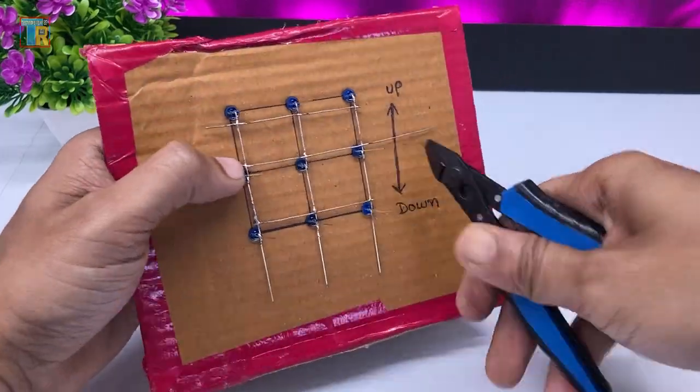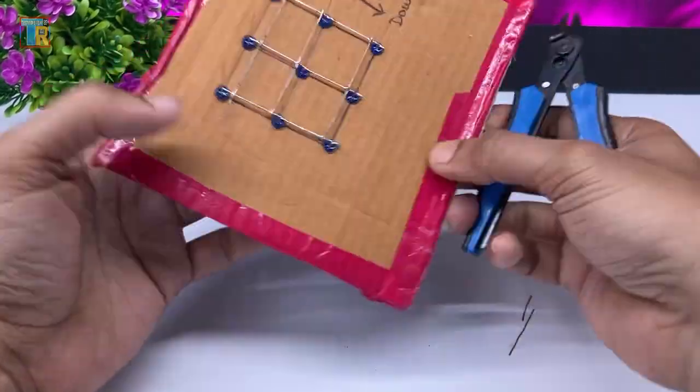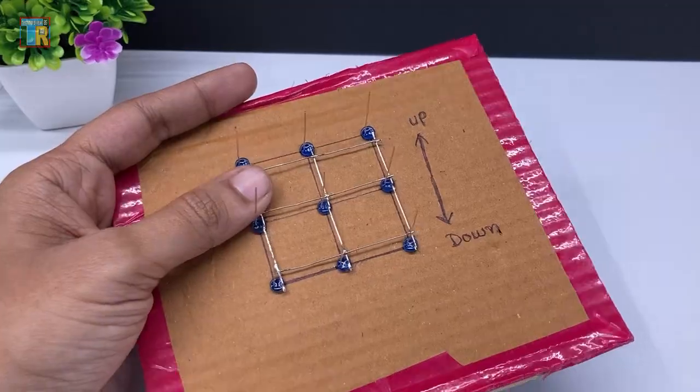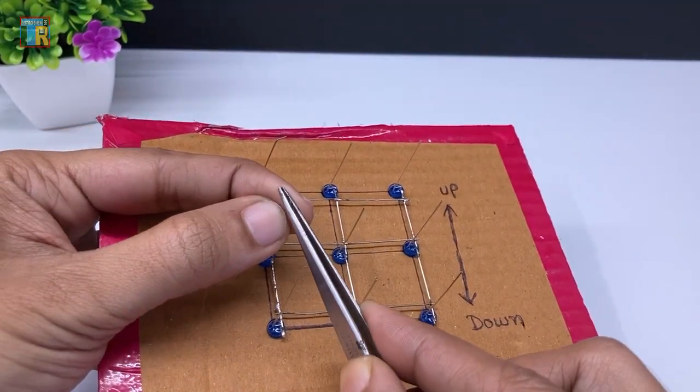The soldering work for one layer is done. I am cutting the excess negative pins after soldering. Now slightly bend the positive pins of the LEDs.